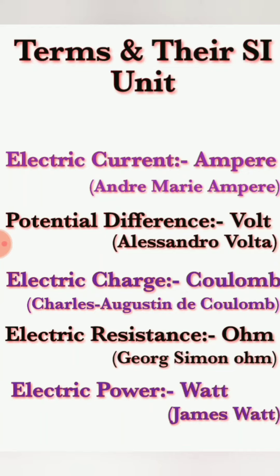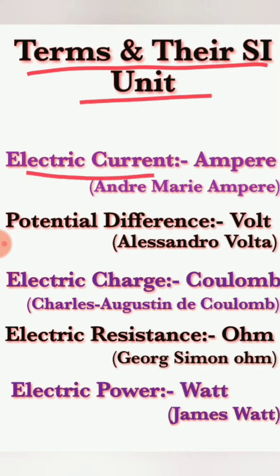Today we are discussing some of the terms concerned with current electricity, as well as their SI units. Number one: electric current. Electric current is measured in a unit called ampere, named in honor of the scientist André-Marie Ampère.